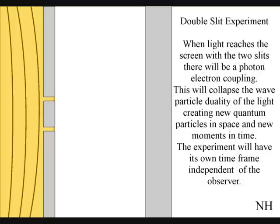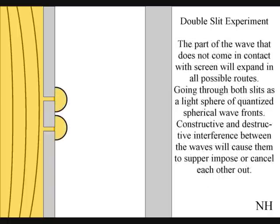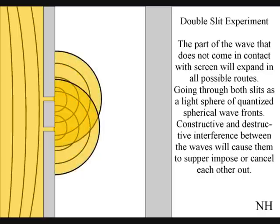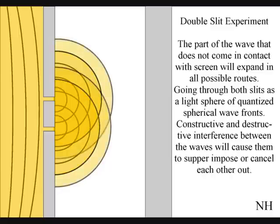When the wave function reaches the screen with the two slits, the photon will react with the electrons of the screen. This will collapse the wave-particle duality of the light, creating new quantum particles in space and new moments in time. The part of the wave that does not come in contact with the screen will expand in all possible routes, going through both slits as two light spheres of quantized wavefronts.